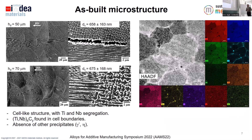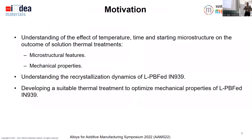We do not find any gamma prime or eta phase precipitating in our as-built samples. This is a rather controversial topic in IN939 — there are papers that say there is gamma prime in the as-built condition, others say there is an eta phase. We did not find any of those, but we do want to study the first step of the typical thermal treatment of IN939, which would be a solution heat treatment. Our motivation is to understand the effect of temperature, time, and starting microstructure on the outcome of the solution heat treatment, on the microstructural features and mechanical properties.